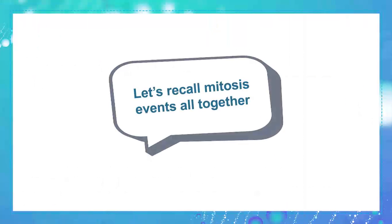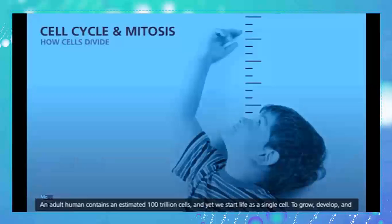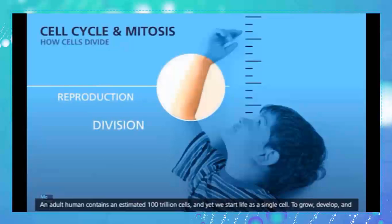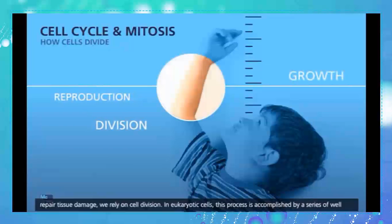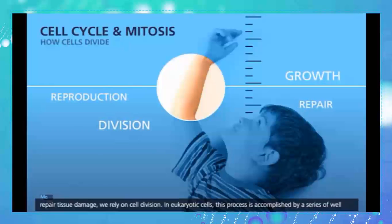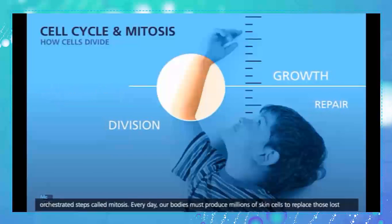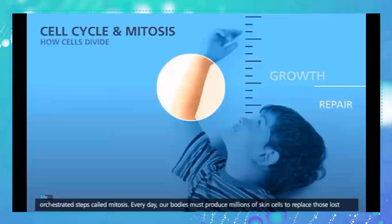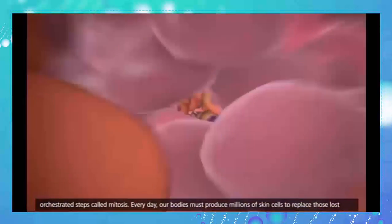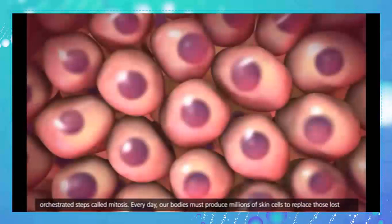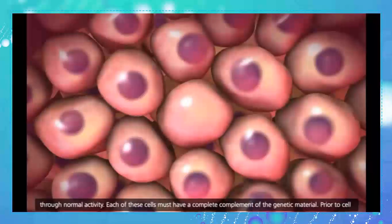Let's recall mitosis events together. An adult human contains an estimated 100 trillion cells, and yet we start life as a single cell. To grow, develop, and repair tissue damage, we rely on cell division. In eukaryotic cells, this process is accomplished by a series of well-orchestrated steps called mitosis. Every day, our bodies must produce millions of skin cells to replace those lost through normal activity.